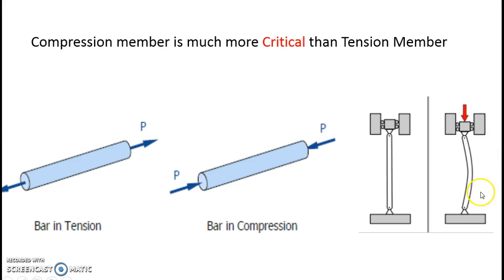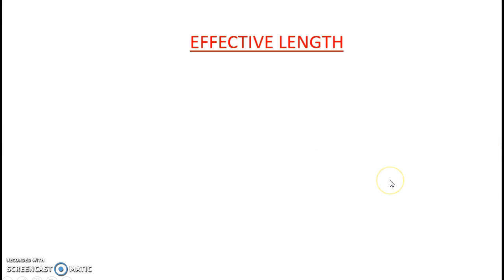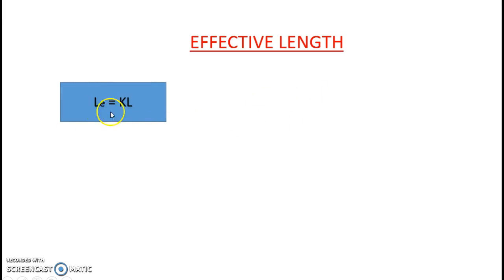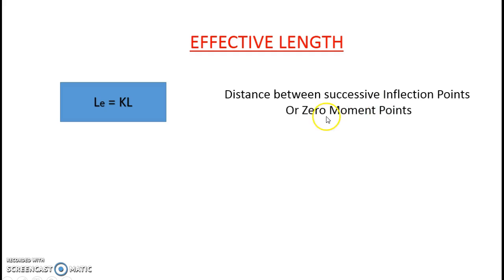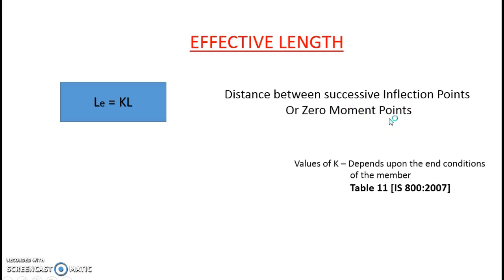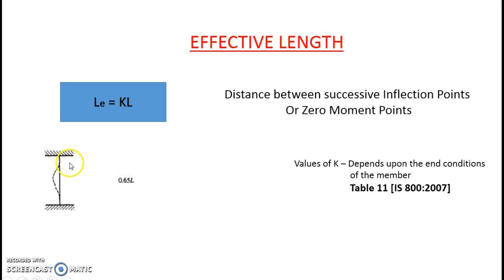Before going to the design part, we need to know some terms. Effective length is basically k into L — it is the distance between the zero bending moment points. L is the unsupported length and k is a constant which depends upon the end conditions of the member, given in Table 11. For example, with both ends fixed, the zero moment points give an effective length of 0.65 times the whole length.